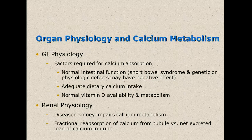Let's look at some of the organ physiology with calcium metabolism. Somebody with normal intestinal function will be able to absorb calcium quite readily. Somebody with an abnormal or dysfunctioning GI system, such as short bowel syndrome or a genetic or physiological defect, would not be able to adequately take up the amount of calcium needed. They would also have issues with normal vitamin D availability and metabolism. On the other end, if you have diseased kidneys, it can impair calcium metabolism and make it very difficult to excrete calcium or phosphorus.